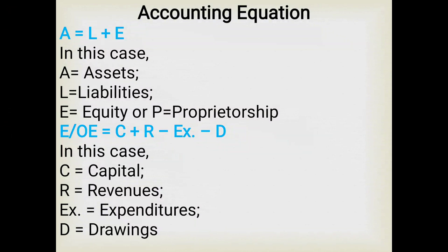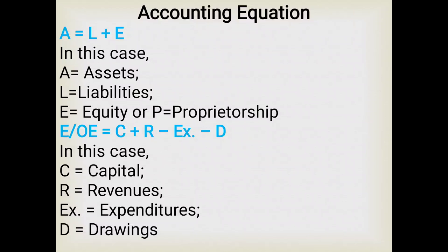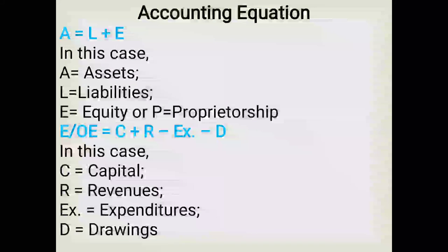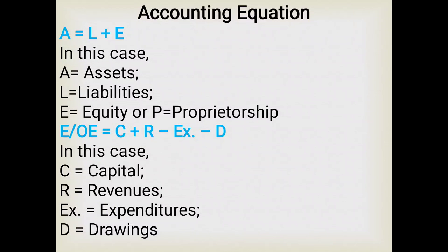Now the main item of this chapter: the accounting equation. At a particular time, the total assets of an organization should equal the sum of owner's equity and external liabilities. The accounting equation is: A = L + E, where A is assets, L is liabilities, and E is equity or proprietorship. Accounting scholars have identified as transactions only those events that affect the elements of the accounting equation — events that make economic changes in assets, liabilities, and equity.